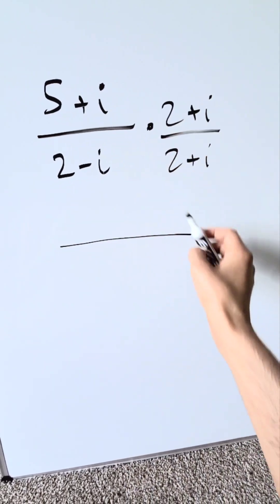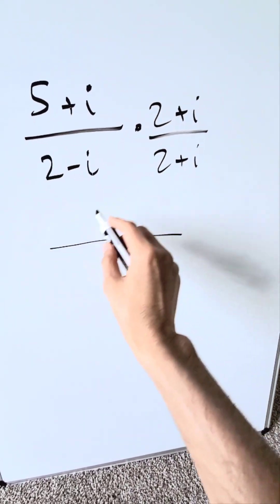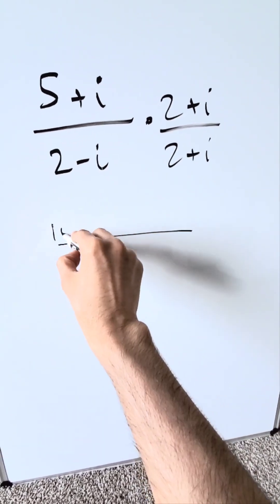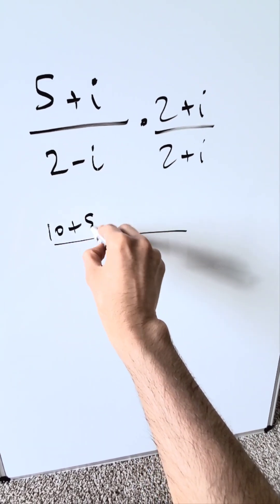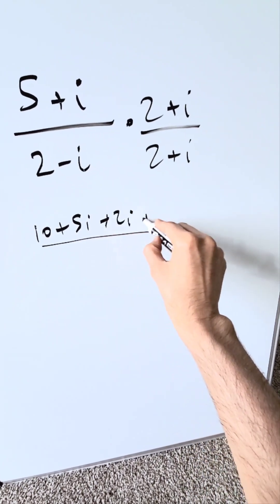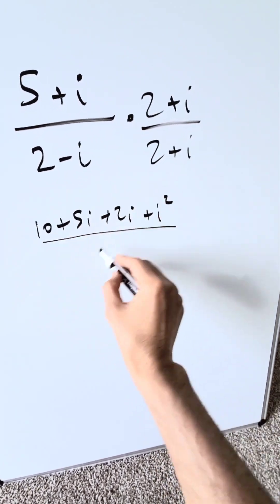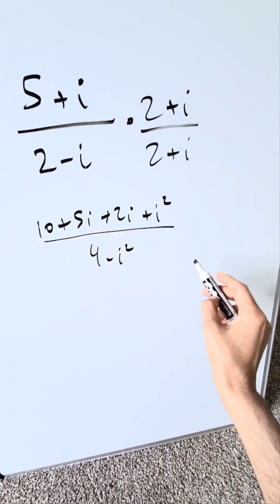Independently in the numerator and the denominator, you're going to multiply across. On the top, you'll have 10 plus 5i plus 2i plus i squared. In the denominator, you'll have 4 minus i squared.